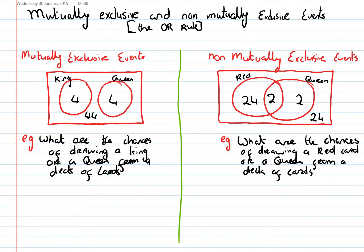First of all, we look at mutually exclusive events. This is very easy. It's just like we did in junior cert. So the probability of getting a king or a queen. Well, the probability of getting A or B is just the probability of getting A plus the probability of getting B.